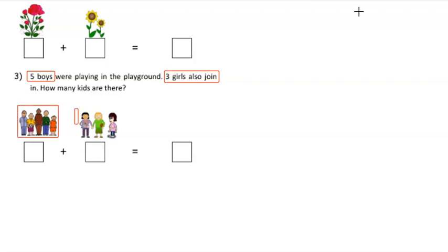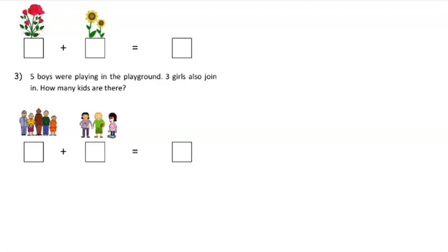Here are the boys and here are the girls. We are asked how many kids there are — in simple terms, we need to add the number of kids. How many boys do we have? We have one, two, three, four, and five, plus three girls, so we continue: six, seven, and eight. How many kids do we have in total? We have eight kids.